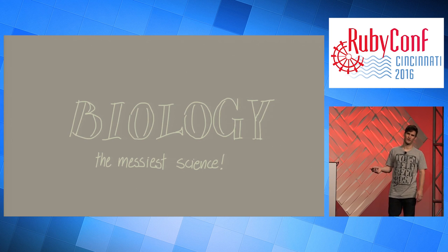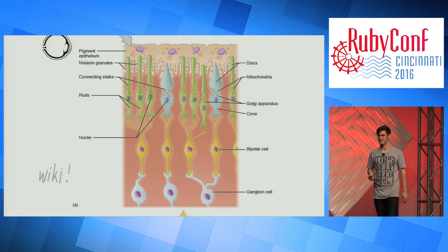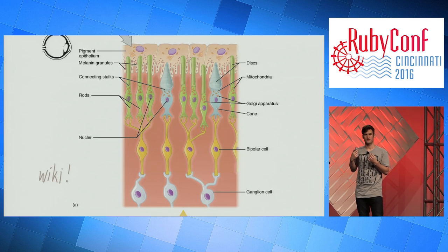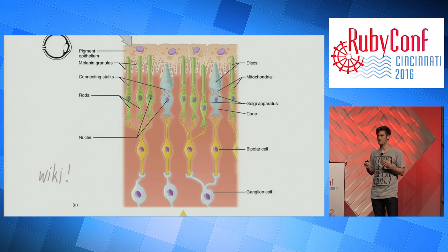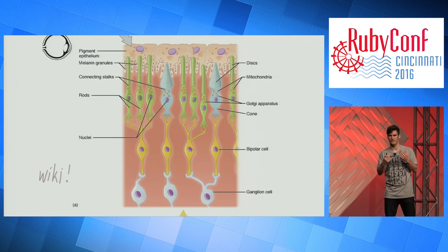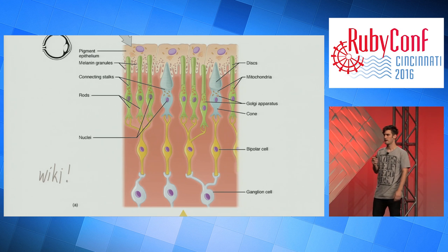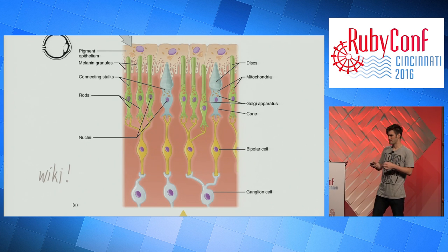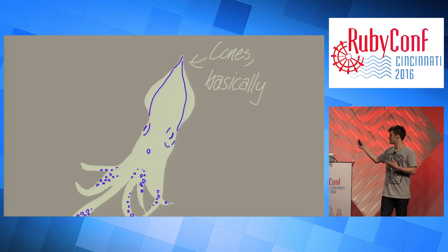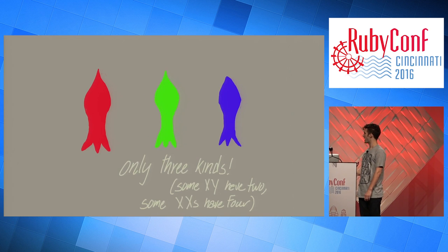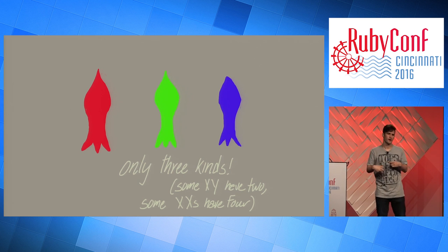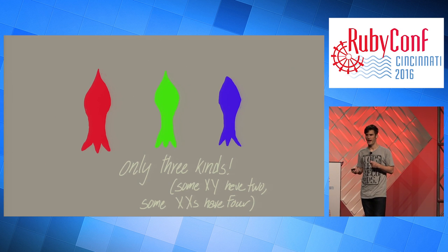The answer is biology — of course, the messiest science of all. Let's get into the real squishy bits: the cells in our eyes. When we receive light into our eyes, there are two different types of cells that receive it. One just receives brightness information, the intensity of light — that's the rods in our eyes. But the cones can give us information about the wavelength, which we perceive as color. We have three different kinds: a red-sensing cone, a green-sensing cone, and a blue-sensing cone, though some XY people have only two. We call that different kinds of color blindness.